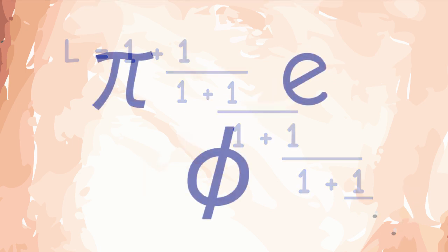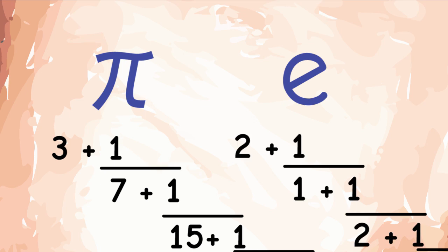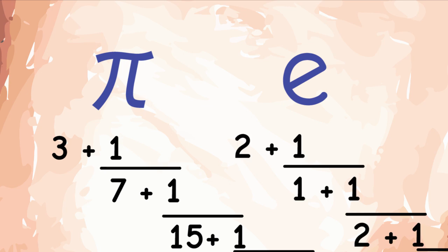This also tells us a lot about irrational numbers, that all of them can be written as infinite, continued fractions. Sure enough, irrational numbers like Pi and E have Continued Fraction expansions that look like these.